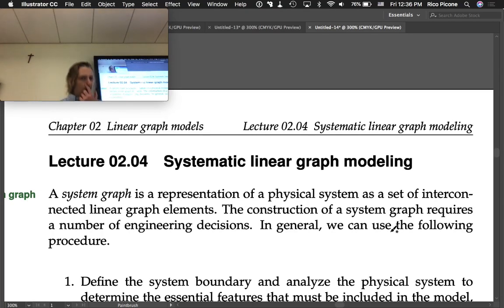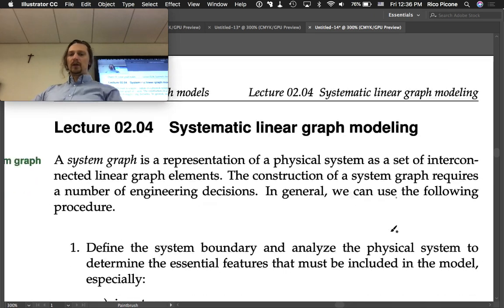Okay, lecture 2.4, systematic linear graph modeling. A system graph is a representation of a physical system as a set of interconnected linear graph elements. The construction of a system graph requires a number of engineering decisions. In general, we can use the following procedure.